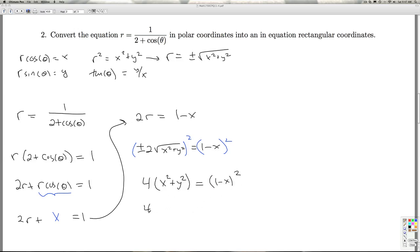So to clean this up, I get 4x squared plus 4y squared. I'm going to multiply this thing out: 1 minus 2x plus x squared. I subtract over the x squared, I get 3x squared.